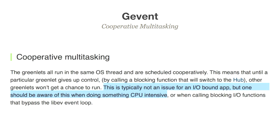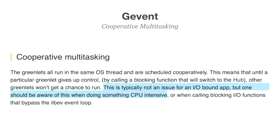The root cause comes down to cooperative multitasking. Coroutines — in this case greenlets — all run in the same operating system thread and schedule cooperatively. Until a particular greenlet gives up control, other greenlets won't get a chance to run. That means as long as you're doing something CPU-bound, you're blocking every other request. GEvent warns: this is not an issue for IO-bound applications, but be aware when doing something CPU-intensive.